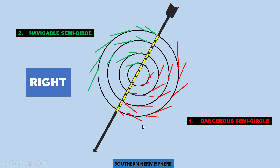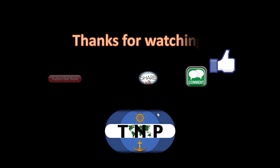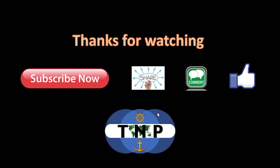Those are the two questions you will see concerning the location of the navigable semicircles in the tropical cyclone. You can take a picture of these two diagrams — for the southern hemisphere and for the northern hemisphere — it will help you a lot. Thank you very much for watching, see you in the next video.